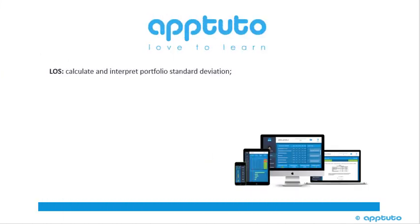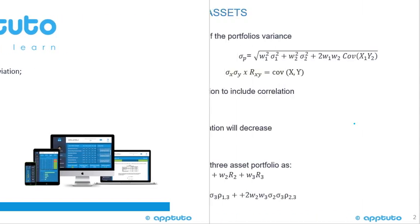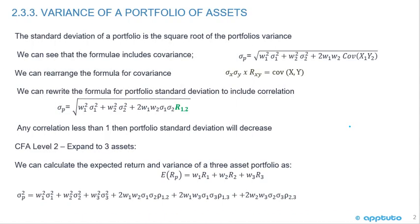This LOS is Calculate and Interpret Portfolio Standard Deviation, covering the variance of a portfolio of assets. The standard deviation of a portfolio is the square root of the portfolio variance.